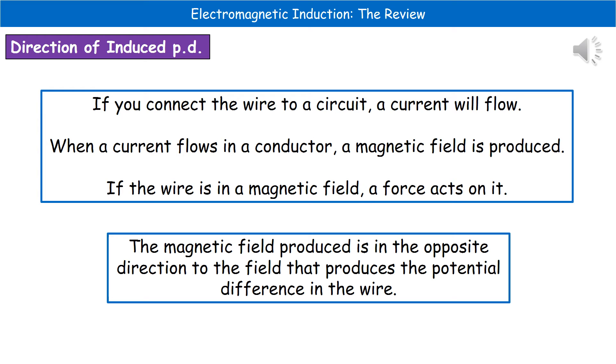So when that current flows through the conductor, what we end up seeing is a magnetic field is going to be produced. And if that wire is already in a magnetic field, then we generate a force that then acts on it.